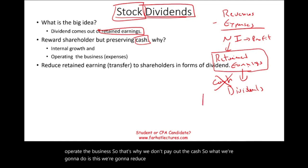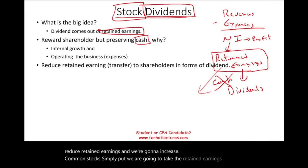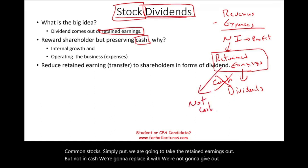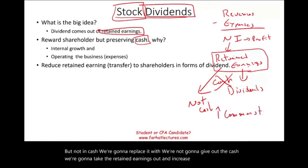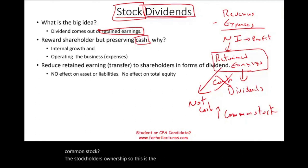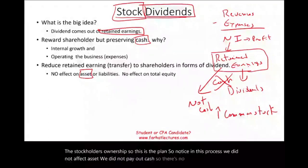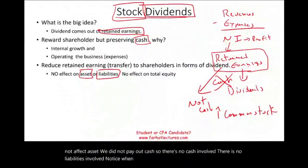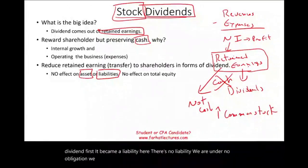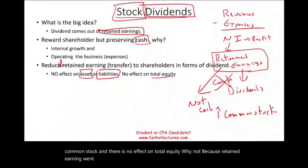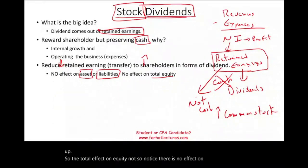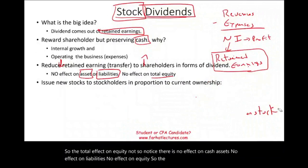So what we're going to do is reduce retained earnings and increase common stock. We take retained earnings out, but not in cash — we increase common stock, which represents stockholder ownership. Notice in this process we did not affect assets, we did not pay out cash, there's no cash involved, and there's no liabilities involved. When we paid cash dividends, we declared the dividend first and it became a liability. Here, there's no liability — we are under no obligation. We decided to take our retained earnings and distribute it in common stock. And there's no effect on total equity, because retained earnings went down while common stock went up — so the net effect on equity is none.